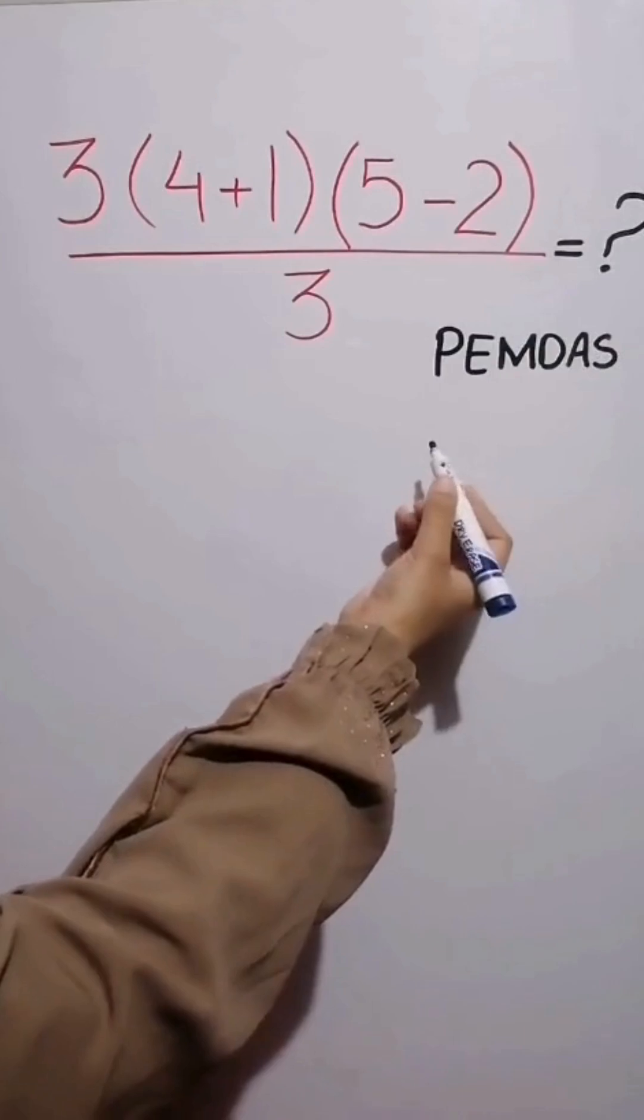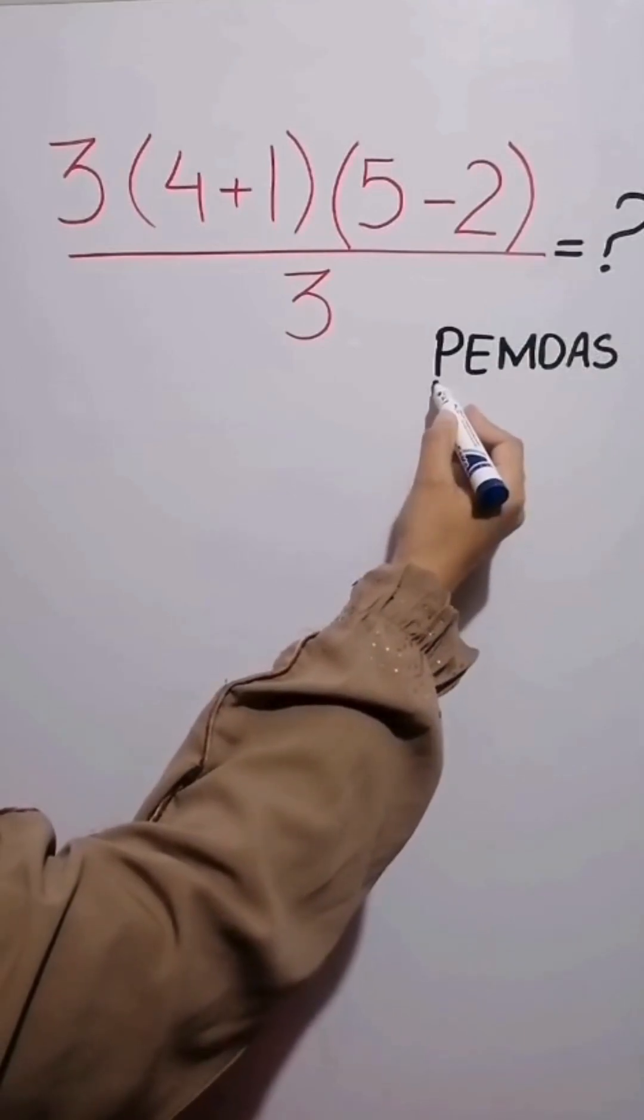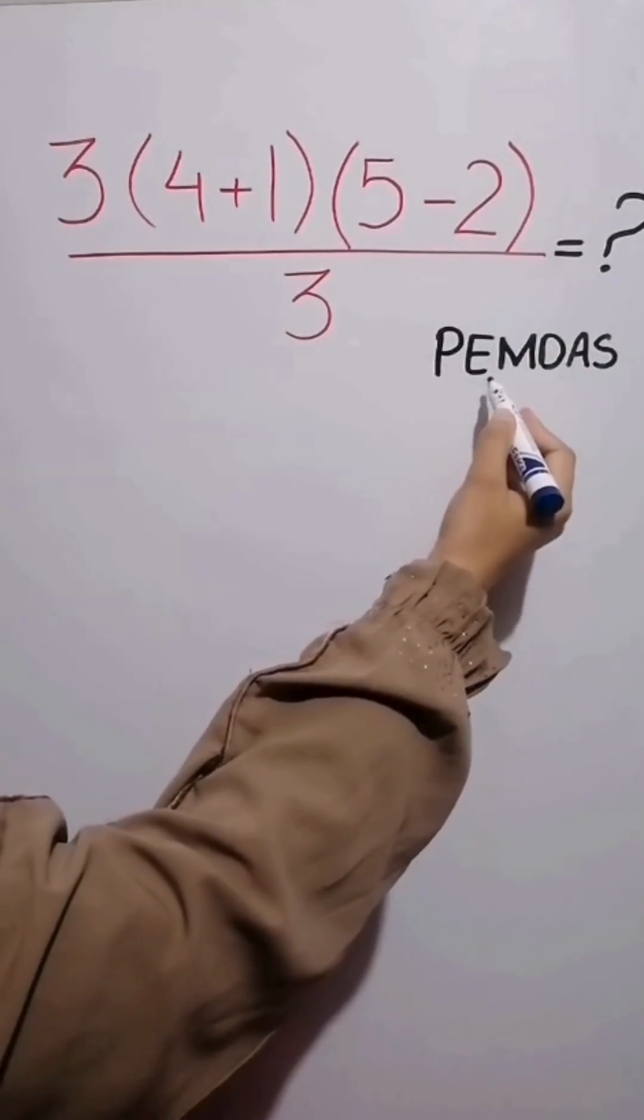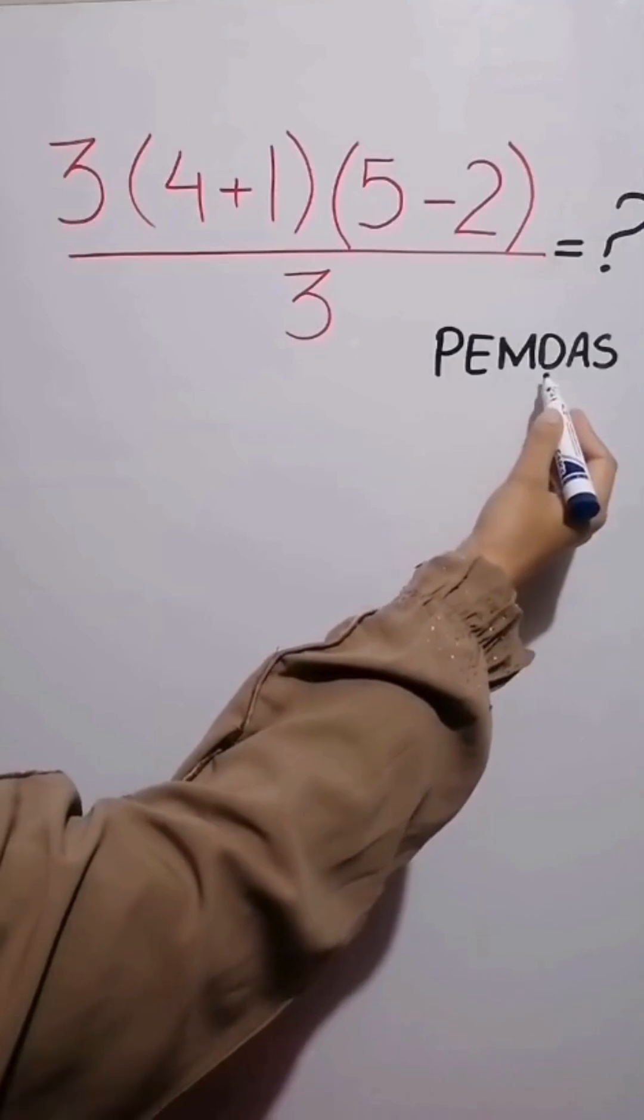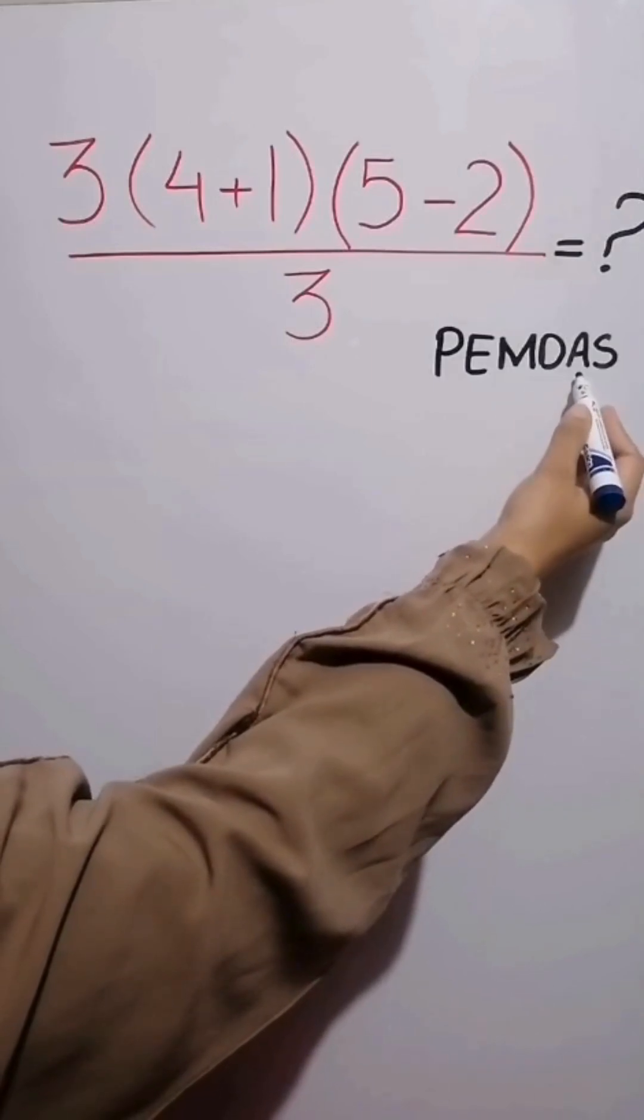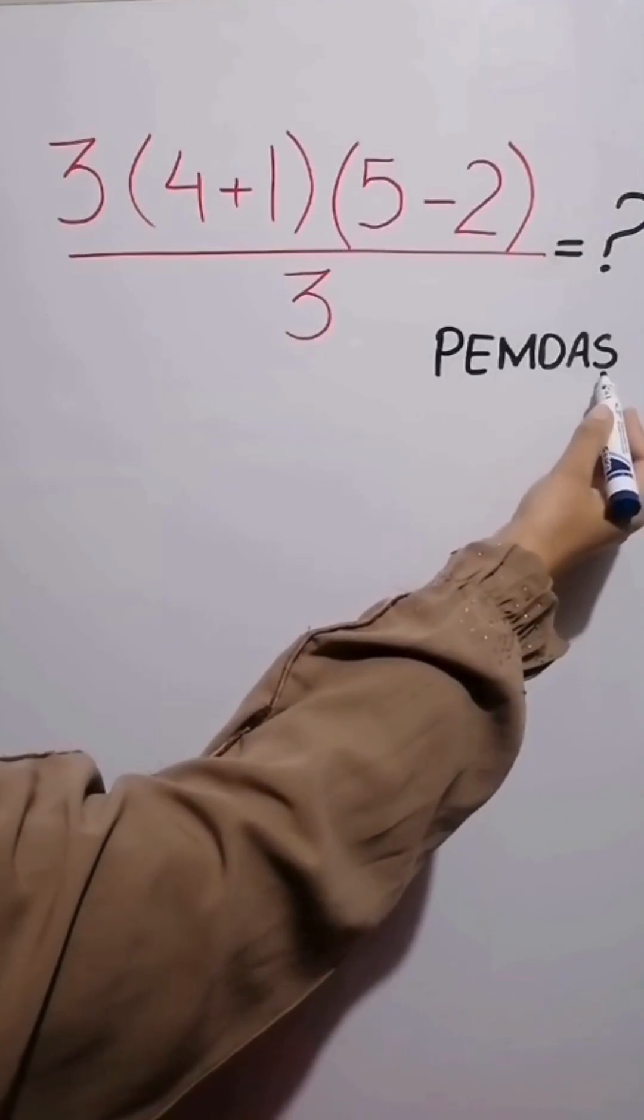In this rule P stands for parentheses, E stands for exponent, M stands for multiplication, D stands for division, addition and then subtraction.